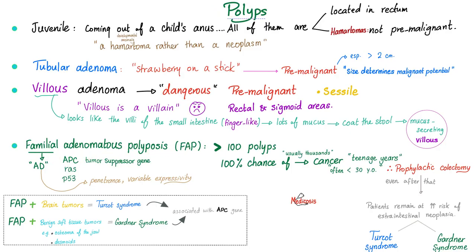In cases of familial adenomatous polyposis, which is an autosomal dominant disease, usually due to mutation in the tumor suppressor gene — when you lose that tumor suppressor gene, you get no suppression of tumor, i.e. you get tumors, you can get cancer. These poor patients have thousands of polyps in their colon, and there is 100% chance of developing colorectal cancer. It's not a matter of if, it's a matter of when. Usually this disease starts after puberty, and then give it some time, it becomes cancer. So we do prophylactic colectomy — before it becomes cancer, we unfortunately have to remove the entire colon. It's a very ugly disease.